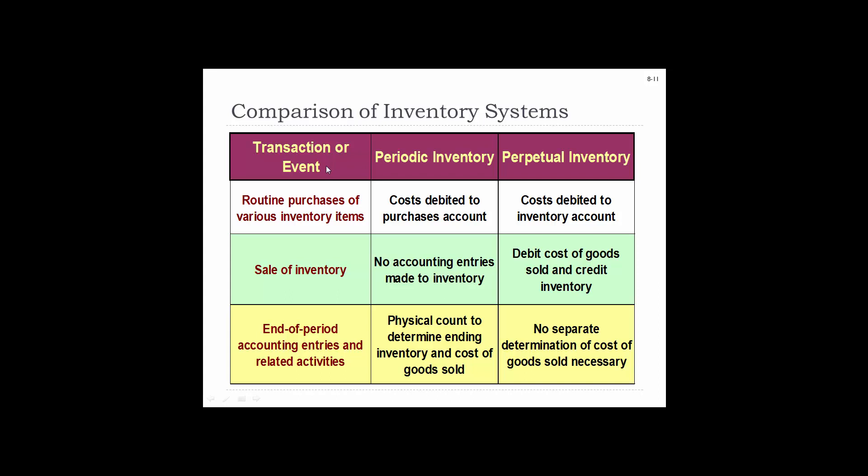Here's a comparison chart of the inventory systems. For a routine purchase, costs are debited to a purchases account using periodic, or debited to inventory using perpetual. When we sell inventory, no adjustment entries are made to inventory in a periodic system. In a perpetual system, we debit cost of goods sold and credit inventory. At the end, for periodic, we need a physical inventory count and adjust cost of goods sold. For perpetual, no determination of cost of goods sold is necessary — we've been keeping track the whole time.